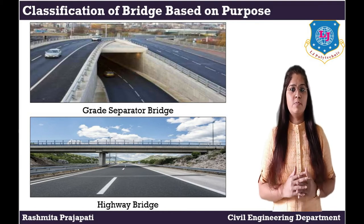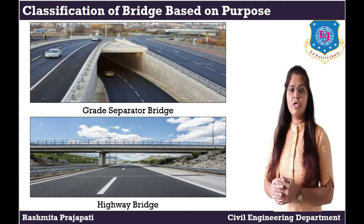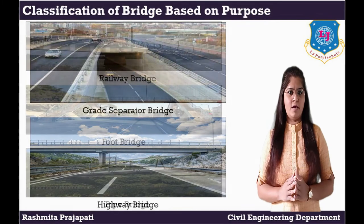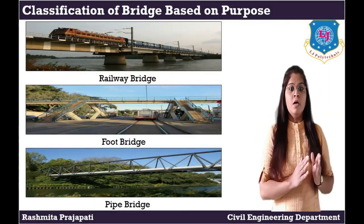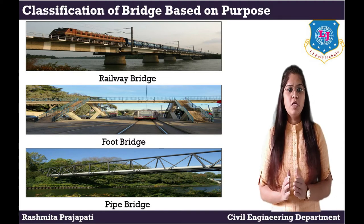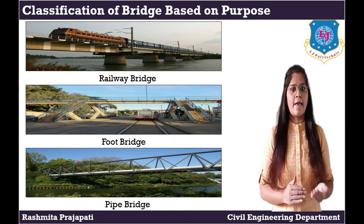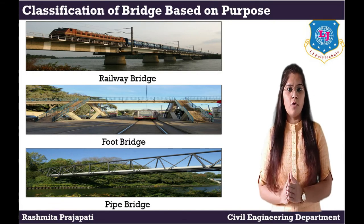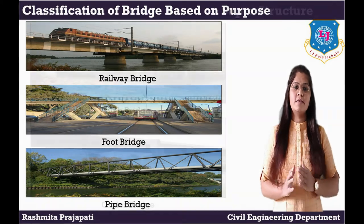Further classification of bridge based on purpose. Highway bridge: it is constructed on a roadway for the movement of vehicles. Railway bridge: it is constructed for railway. Foot bridge: a foot bridge is a bridge exclusively used for carrying pedestrians, cycles and animals. Pipe bridge: it is used to support pipelines for water, gas, oil, etc.